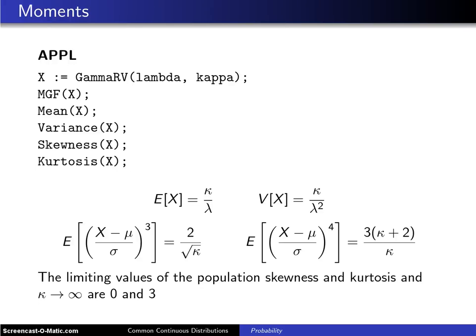This slide considers the moments of the gamma distribution. One way to find those moments is in APPL. You can set x equal to a gamma random variable with scale parameter lambda and shape parameter kappa.